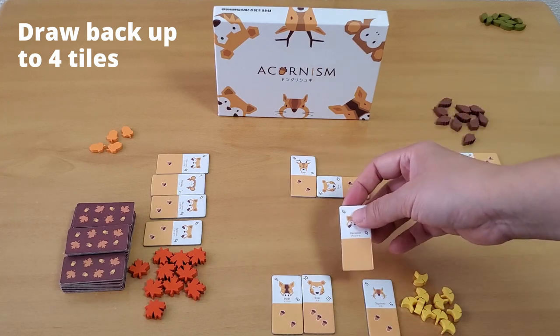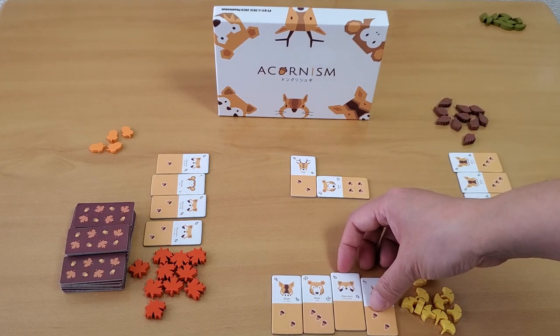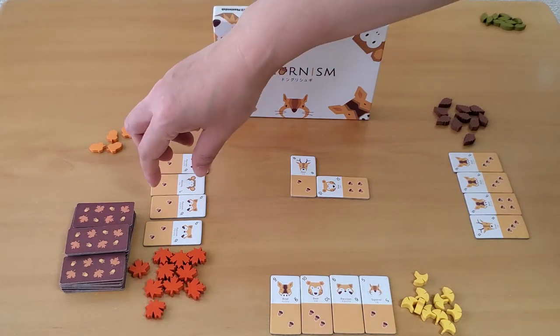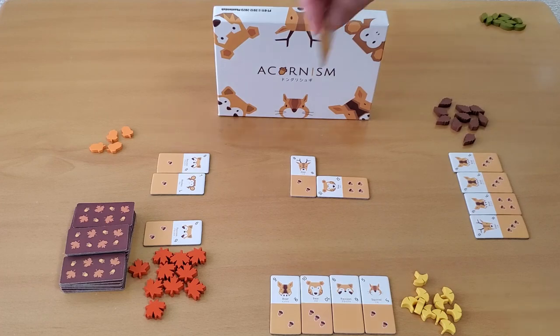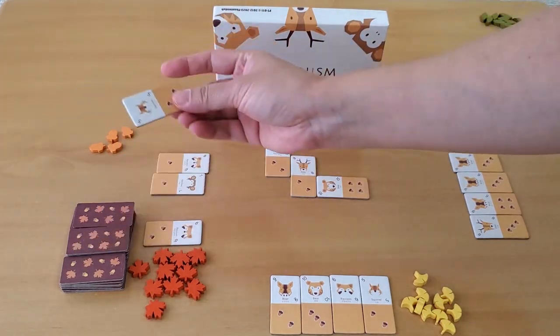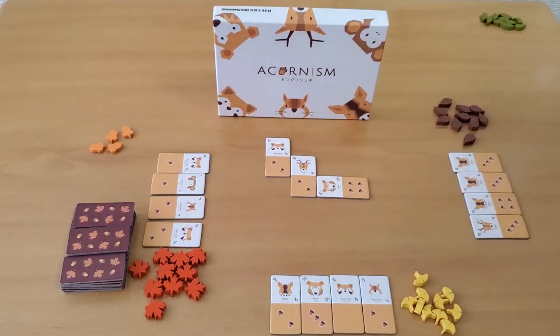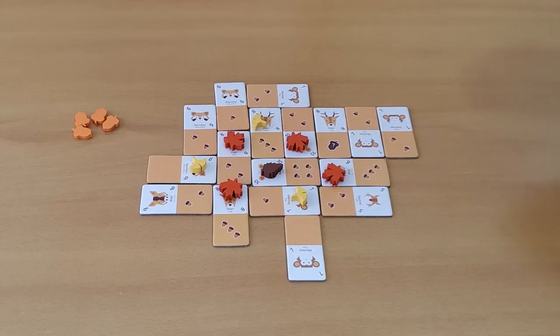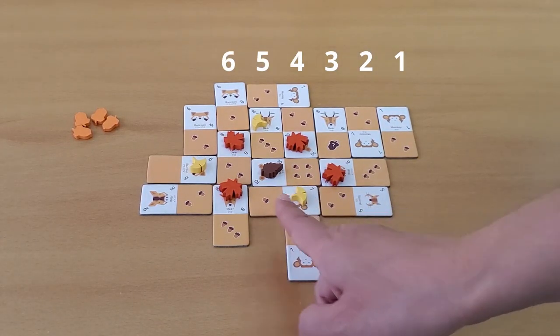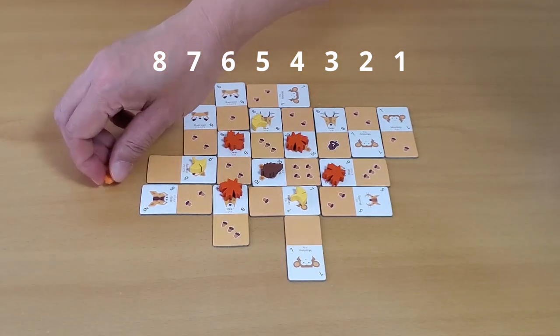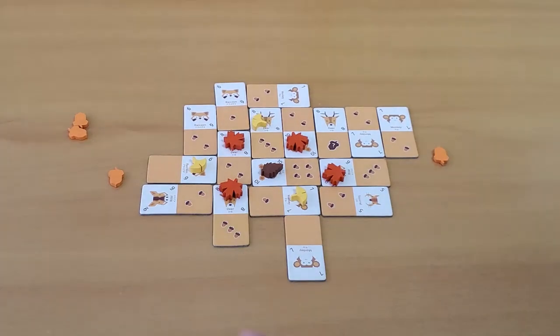If on your turn you are unable to play a tile, you can pass. Then, going clockwise, it's the next player's turn. The play area can grow in either direction. As soon as the eighth space has been placed, that determines the size of the field. Place an acorn on both sides to help mark the boundaries. Tile spaces cannot be placed outside of this boundary.